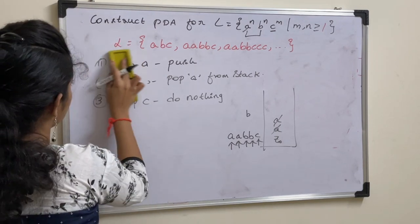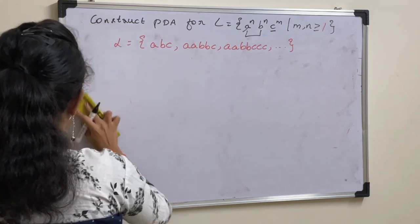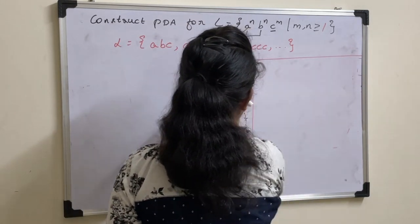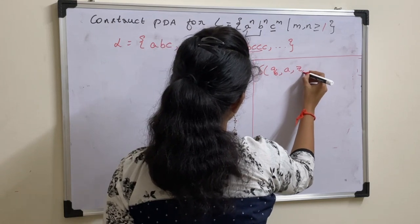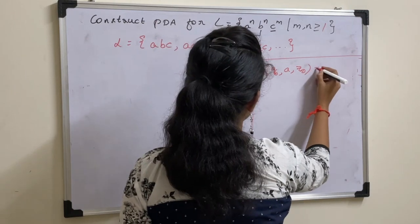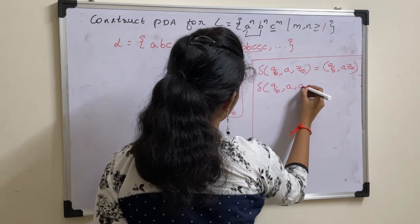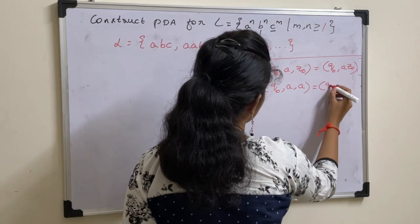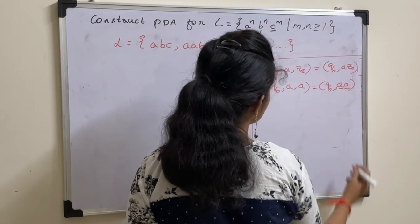Now let us write the transition functions. Take the string. Delta of (Q naught, A, Z naught): initially, the top of the stack is Z naught and the input symbol is the 1st A, so perform a push operation — it gives (Q naught, A Z naught). Next, delta of (Q naught, A, A): the next input symbol is also A and the top of the stack is A, so no state change and push the 2nd A onto the stack, giving A A.